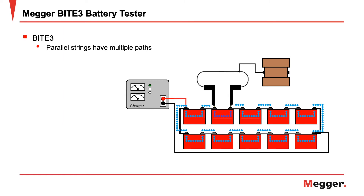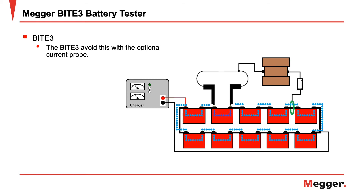IEEE 1188 recommends taking parallel strings offline and separating them. The Byte 3 avoids this with the optional current probe, which allows it to measure the escape current going through the parallel string so you can get an accurate measurement of each cell without the need to segment the string.